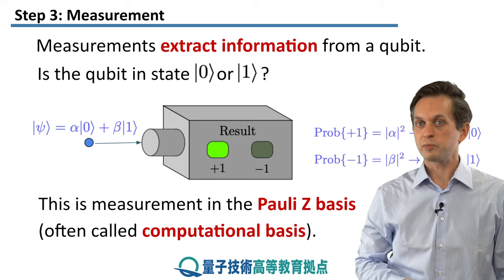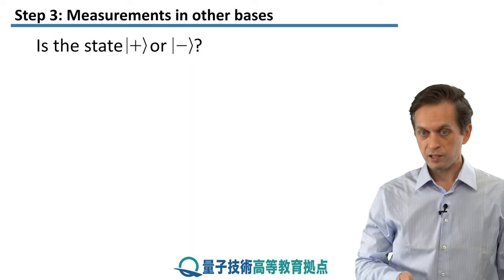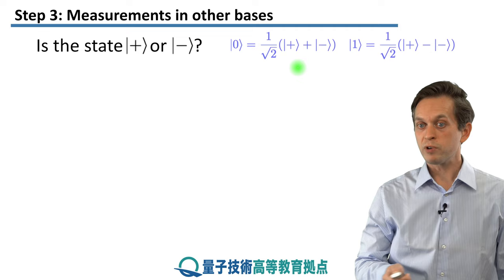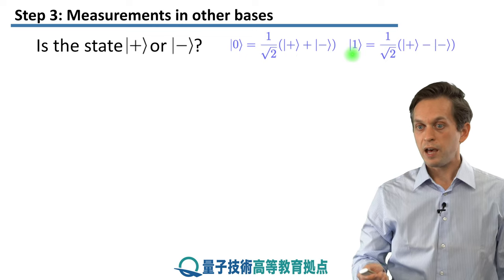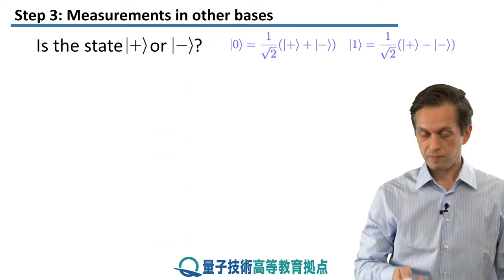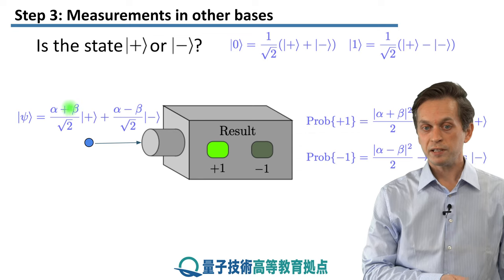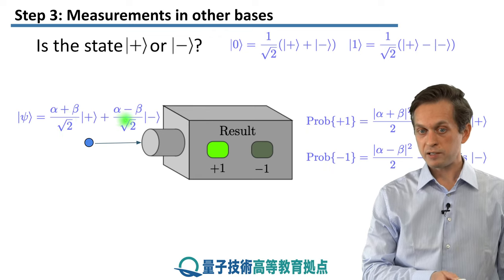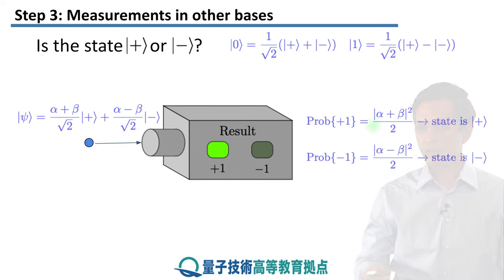This already hints at the fact that this is not the only measurement we can do. We can in fact ask the following question: is the state in a plus state or in a minus state? What we can actually do is answer this question by rewriting our original state psi. We can notice that |0> is given by an equal superposition of the plus state with the minus state, and the state |1> is in fact an equal superposition of plus and minus, but this time with a minus phase in front of the minus state. So we can rewrite our original state psi in terms of the plus and minus states. The probability amplitude for the |+> state is alpha plus beta, renormalized by the square root of 2, and we can feed this qubit into the measurement device.